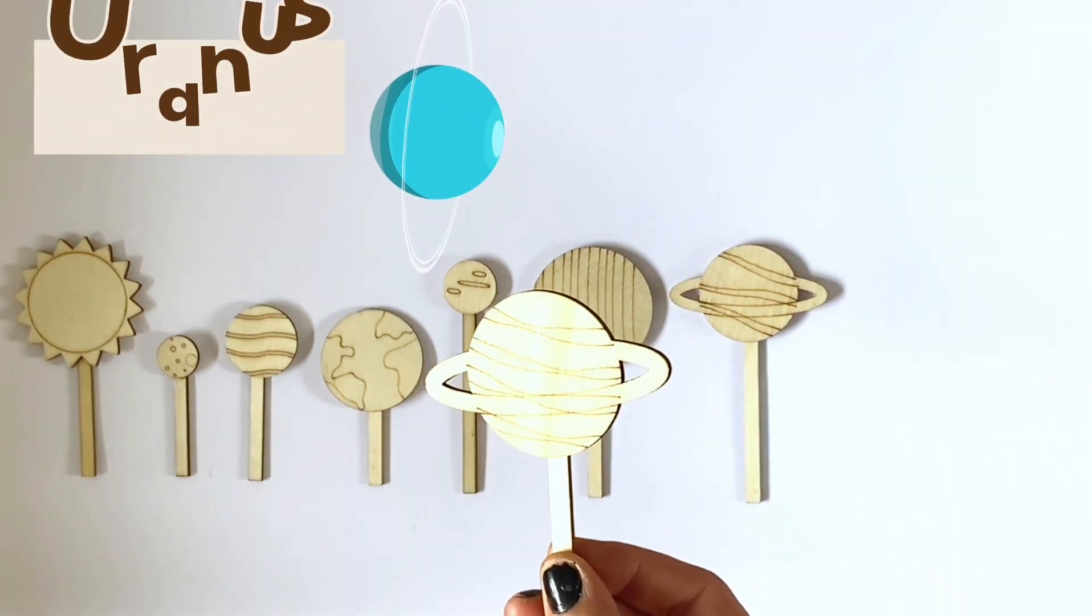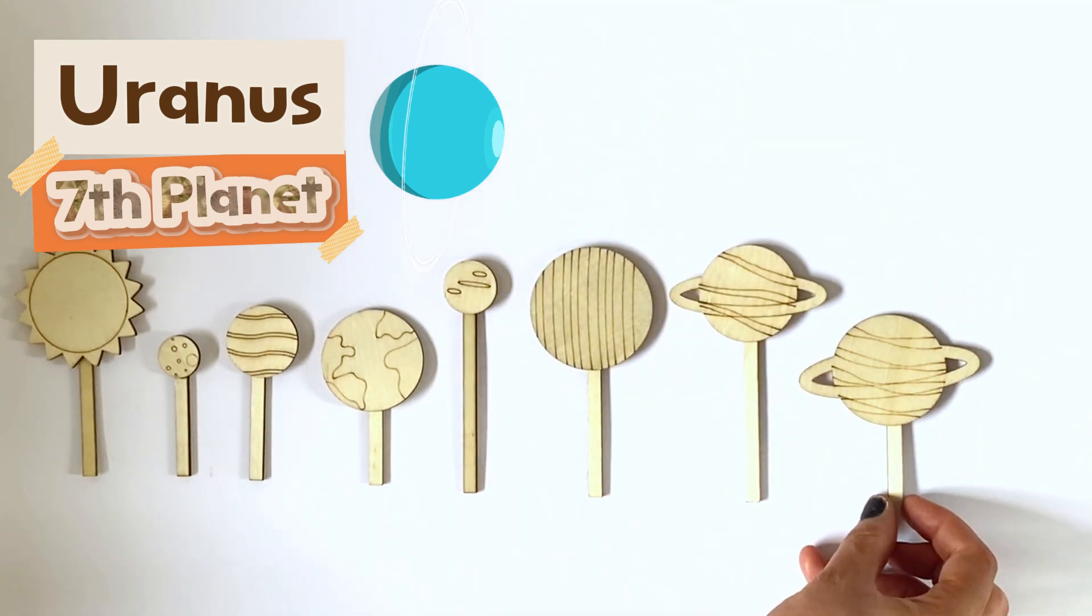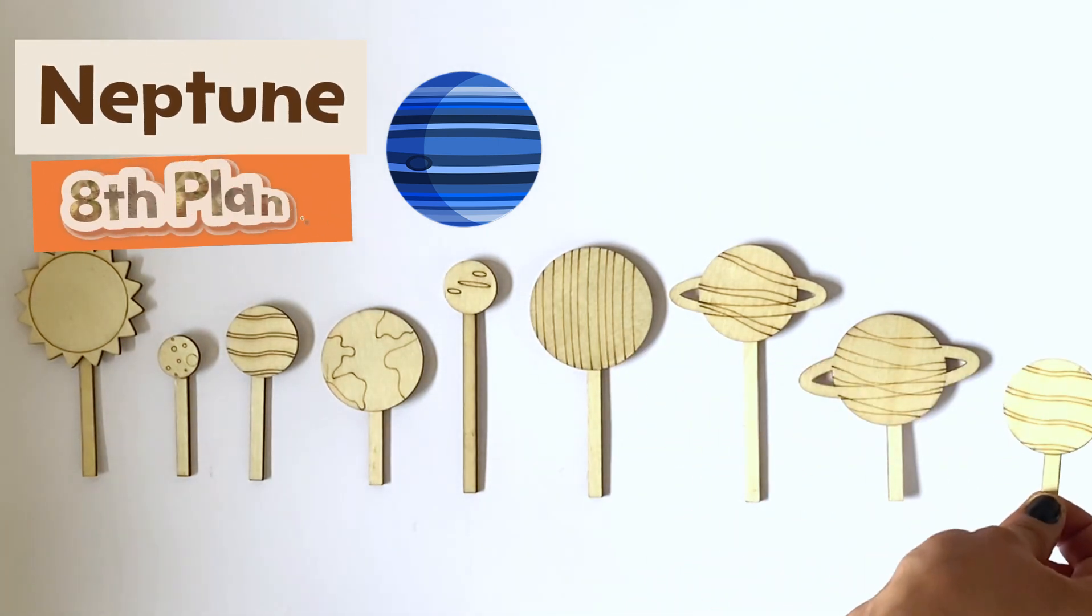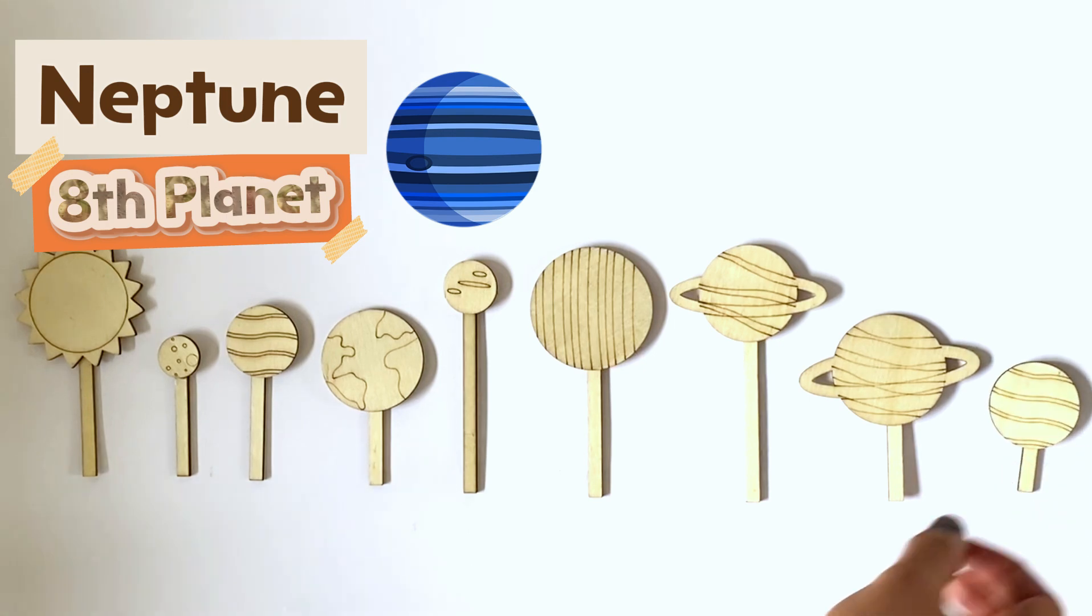This set also comes with Uranus with its ring, however it should be upside down. And lastly we have a Neptune model. So now we're going to go ahead and paint them all and learn facts about each planet.